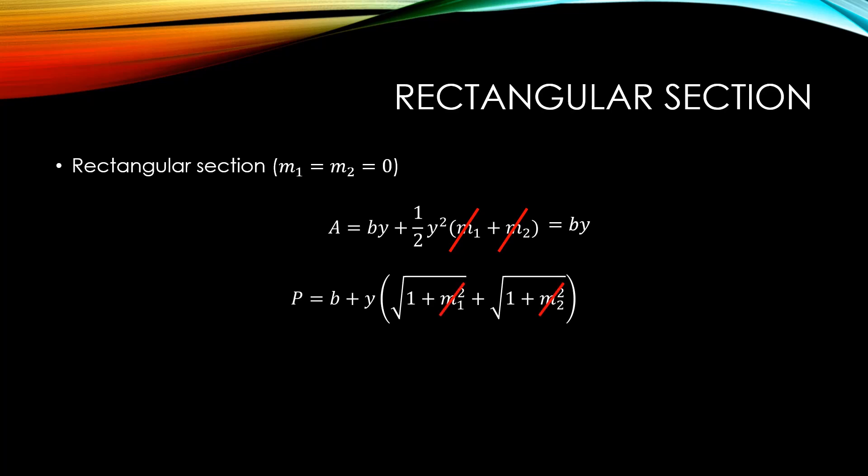Similarly, we can eliminate them from the wetted perimeter equation and get a wetted perimeter of base plus two times depth.